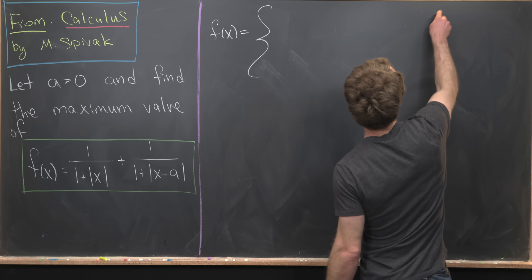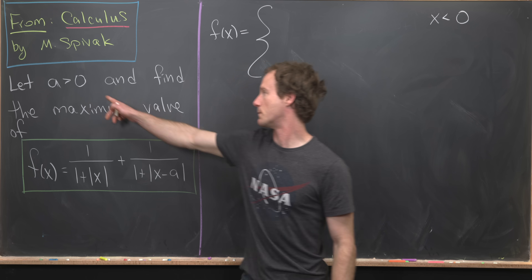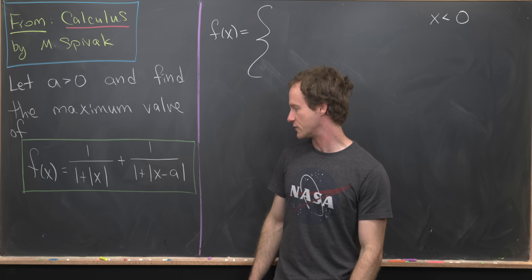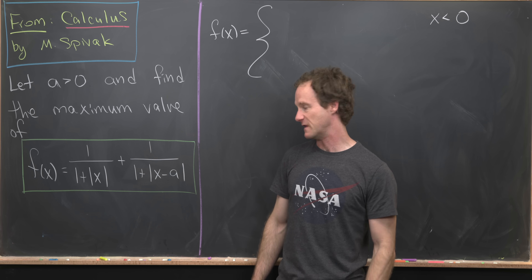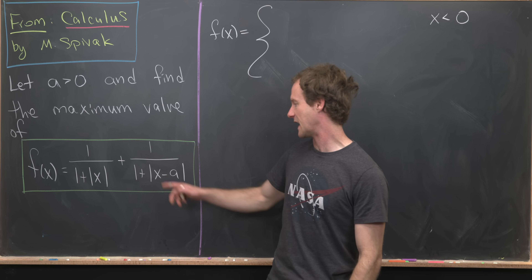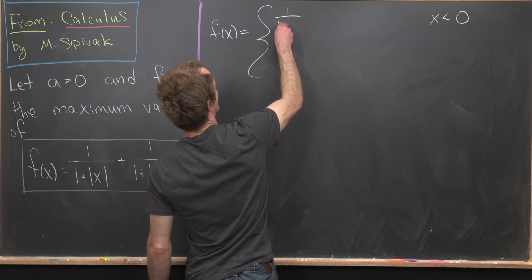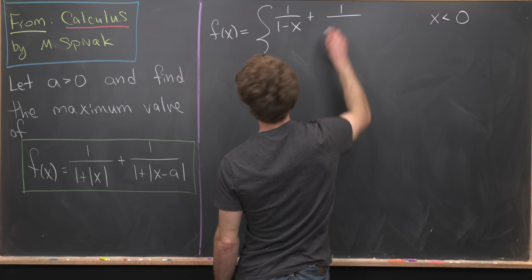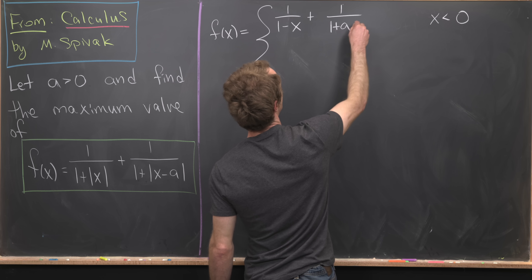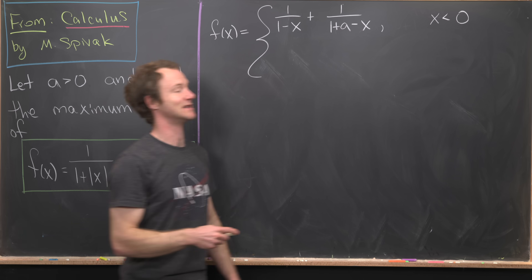First, if x is less than zero, then x − a is also less than zero by that condition, which means |x| and |x − a| can be replaced with the negatives of what's inside. In other words, −x and −(x − a). So we have 1/(1 − x) + 1/(1 + a − x), and that is for the case when x < 0.